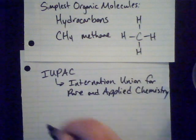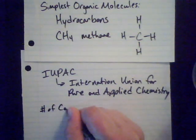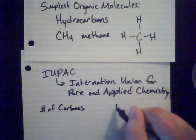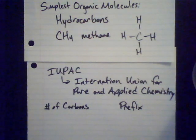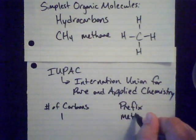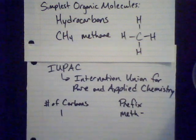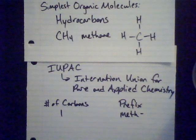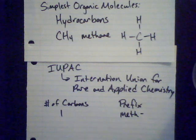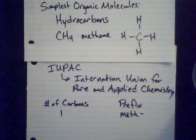Let's make a chart of the number of carbons and their prefix. I want you to know one through eight. One carbon gives a prefix of 'meth.' You may recognize 'meth' from things like Breaking Bad — methamphetamines. The difference between an amphetamine and methamphetamine is the difference of one methyl group, one extra carbon on the structure, and that changes the way it is absorbed into our bodies.